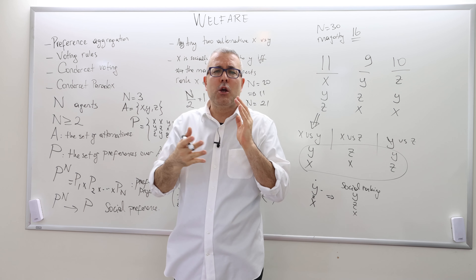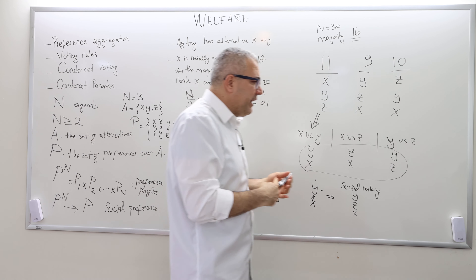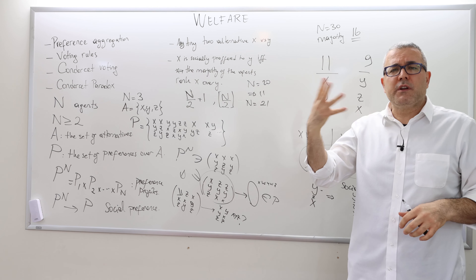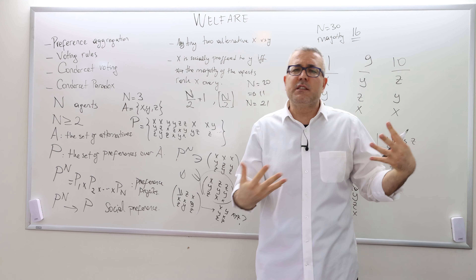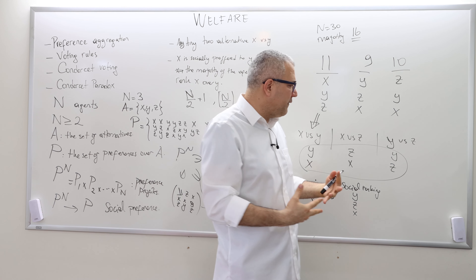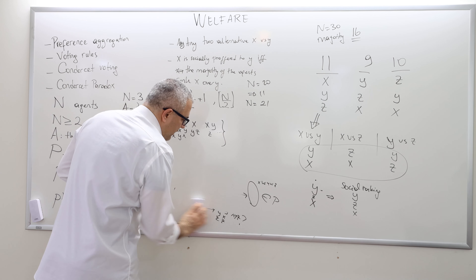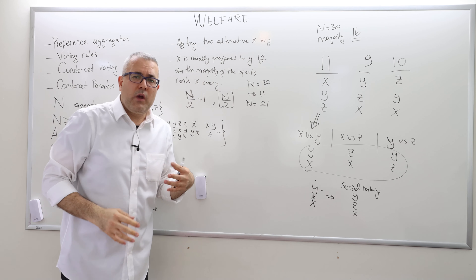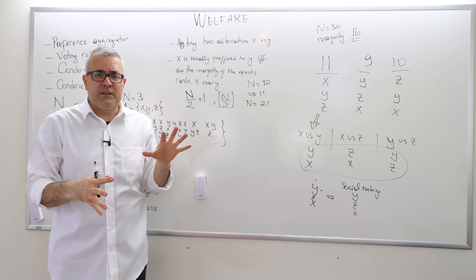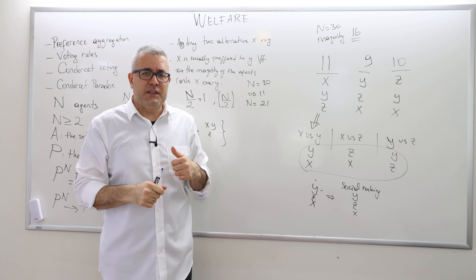Bringing it all together: y is above x, z is above x, and y is above z. So the social ranking is y first, z second, x last. This is how Condorcet voting works — it's an intuitive criterion because the majority decides each pairwise comparison. However, Condorcet voting sometimes leads to problems, which we call the Condorcet paradox. That's coming up next.